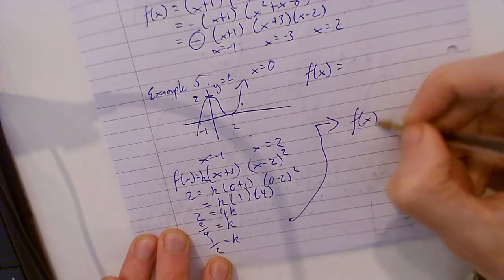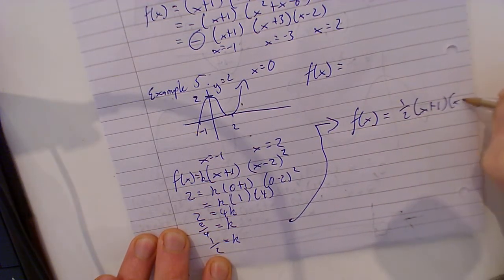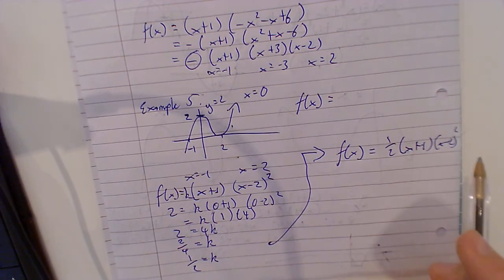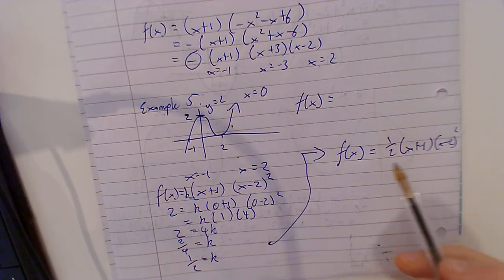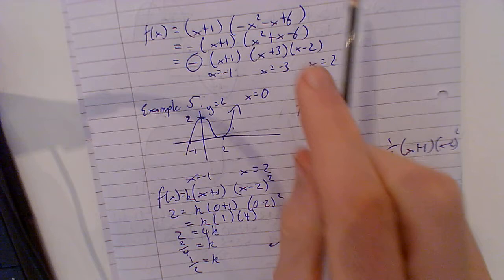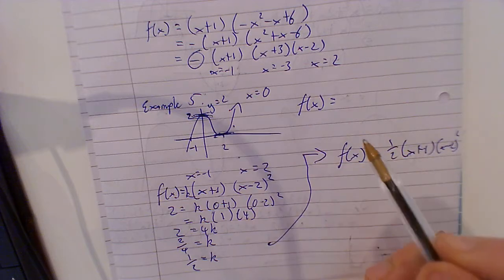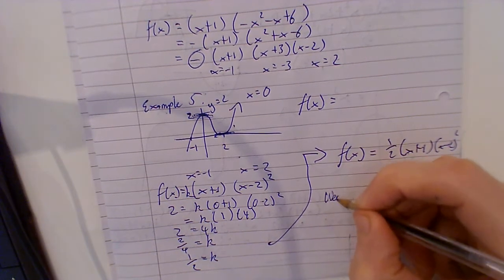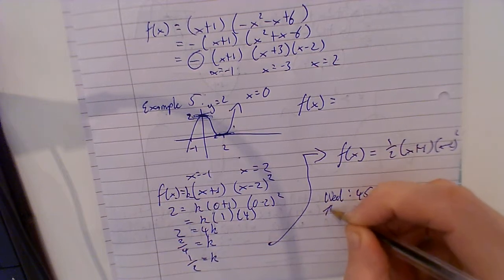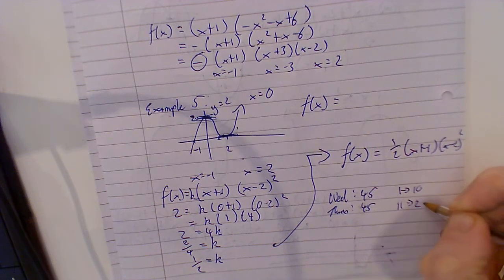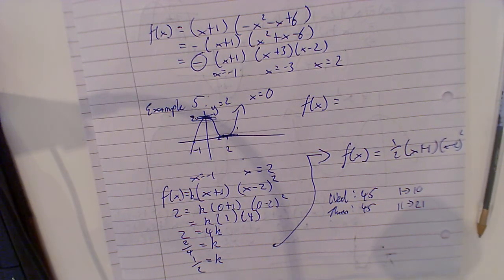Bringing it back: f of x equals one half times x plus 1 times x minus 2 squared. Now all you have to do is multiply that out, then differentiate to find the turning points. We've already got one turning point and actually both turning points. The work for Wednesday is 45 minutes, Thursday 45 minutes — something like questions 1 to 10, then 11 to 21, and up to 24. I want to see some evidence of your work.